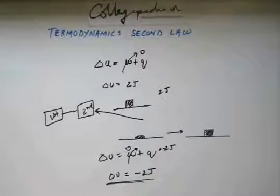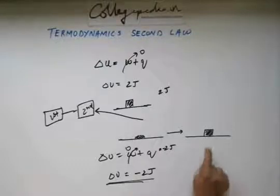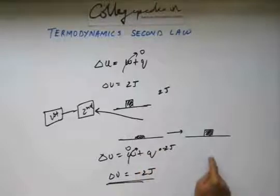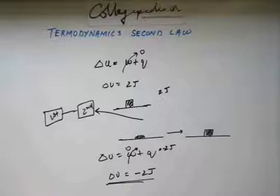So, we are looking forward for a process or a law or a principle that will guide us in predicting whether a given process is permissible to move in a particular direction, whether ice cube is permissible, is permitted to move towards melting and moving towards water, or if water is permitted to move and form an ice cube. So, this direction of movement of a process that is found out by thermodynamics second law.